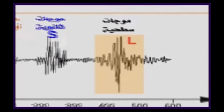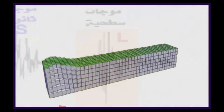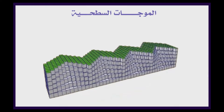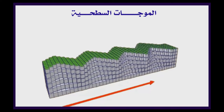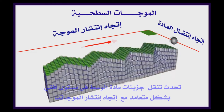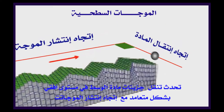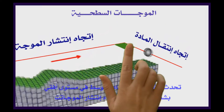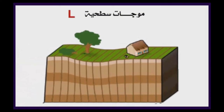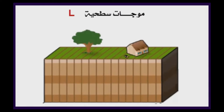بينما الموجات L أو الموجات السطحية، سُميت كذلك لأنها تنتشر في الطبقات السطحية للكرة الأرضية، لها نمط انتشار تموجي أفقي. تحدث هذه الموجة تنقلاً لجزيئات مادة الوسط في مستوى أفقي متعامل مع اتجاه انتشارها، وتحدث ضرراً كبيراً على سطح الأرض لذلك سميت بالموجات السطحية.